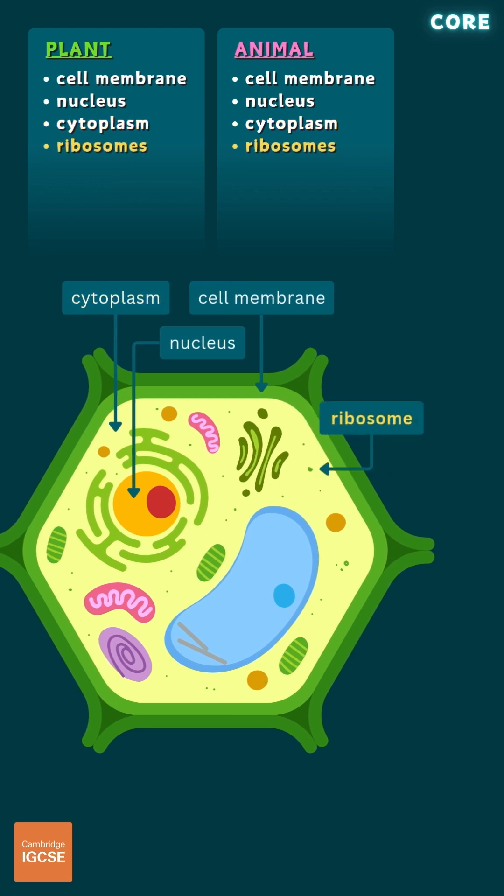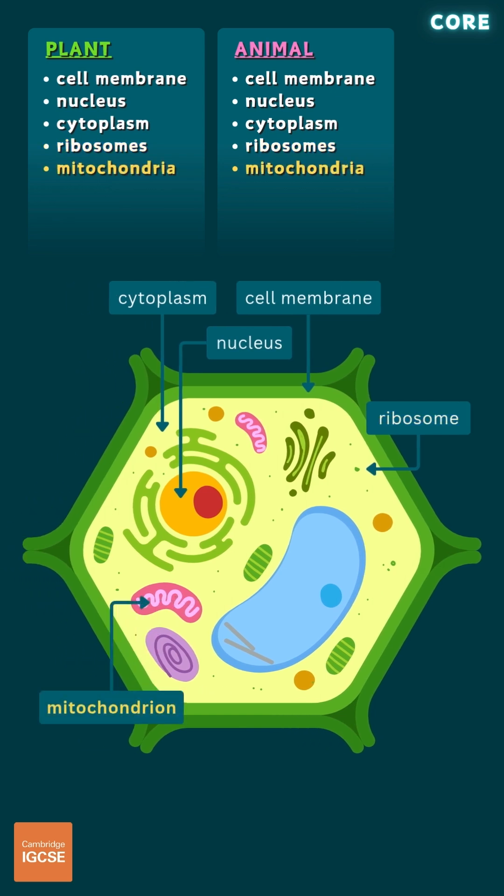Both cell types also contain ribosomes, which are the sites of protein synthesis, and mitochondria, which generate energy or ATP through cellular respiration.